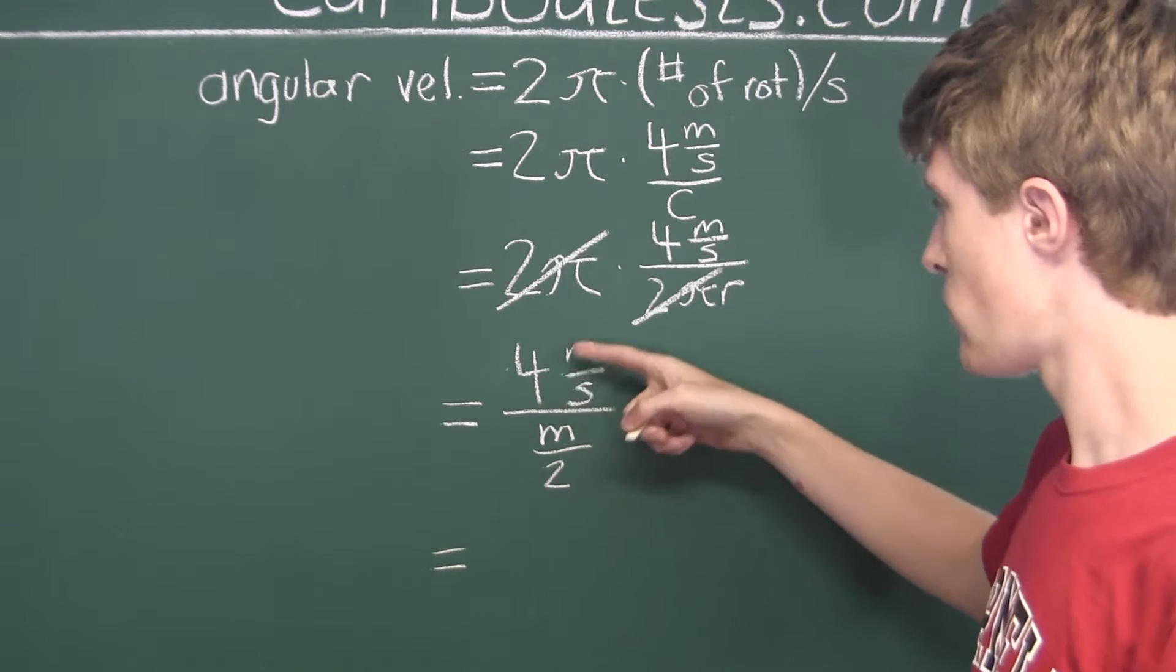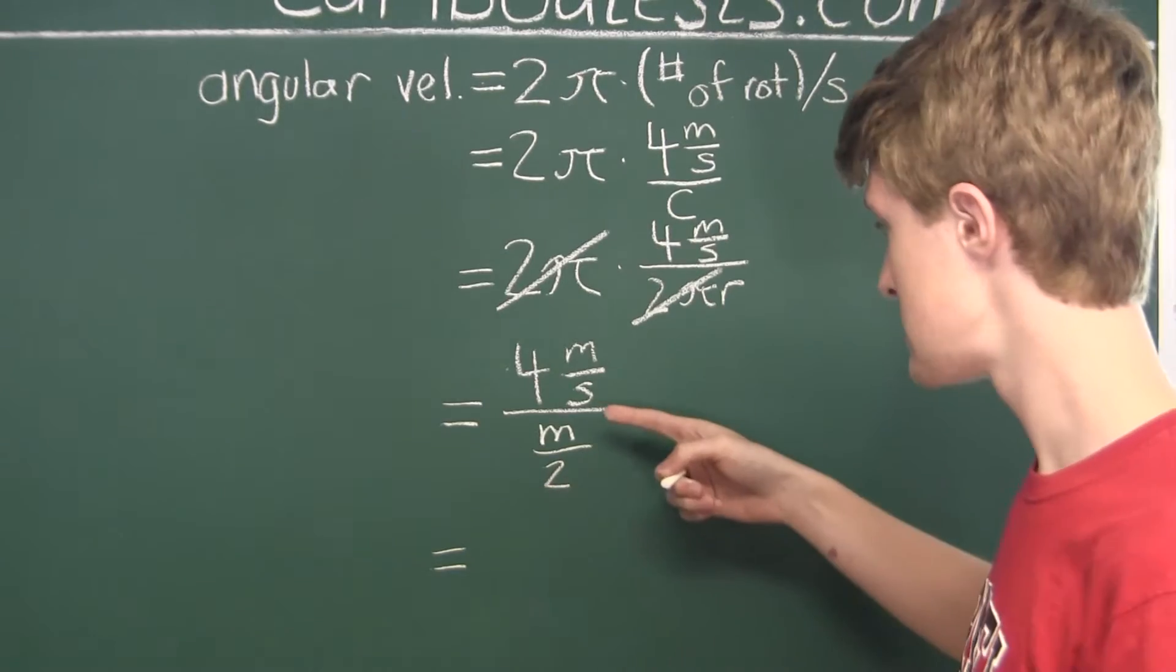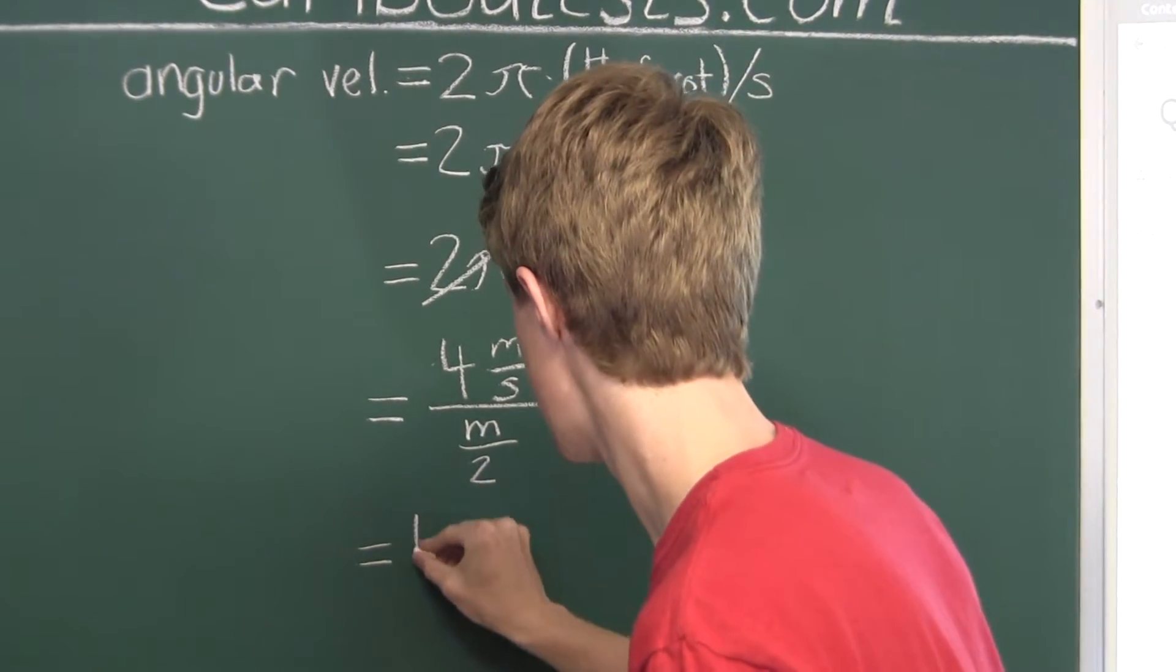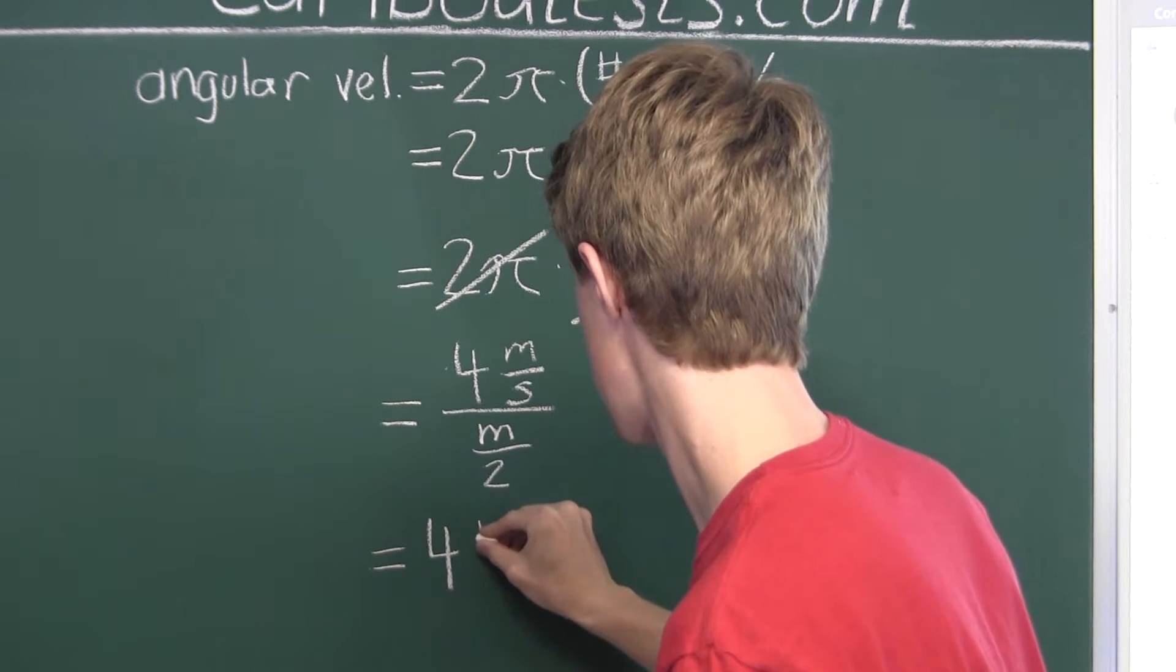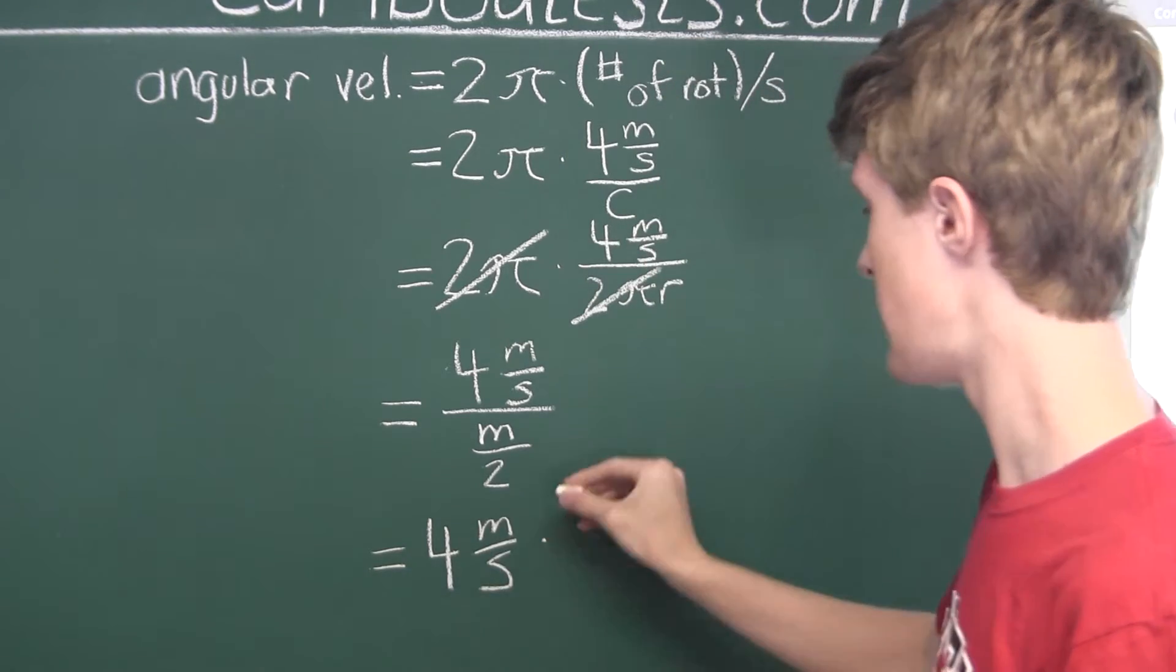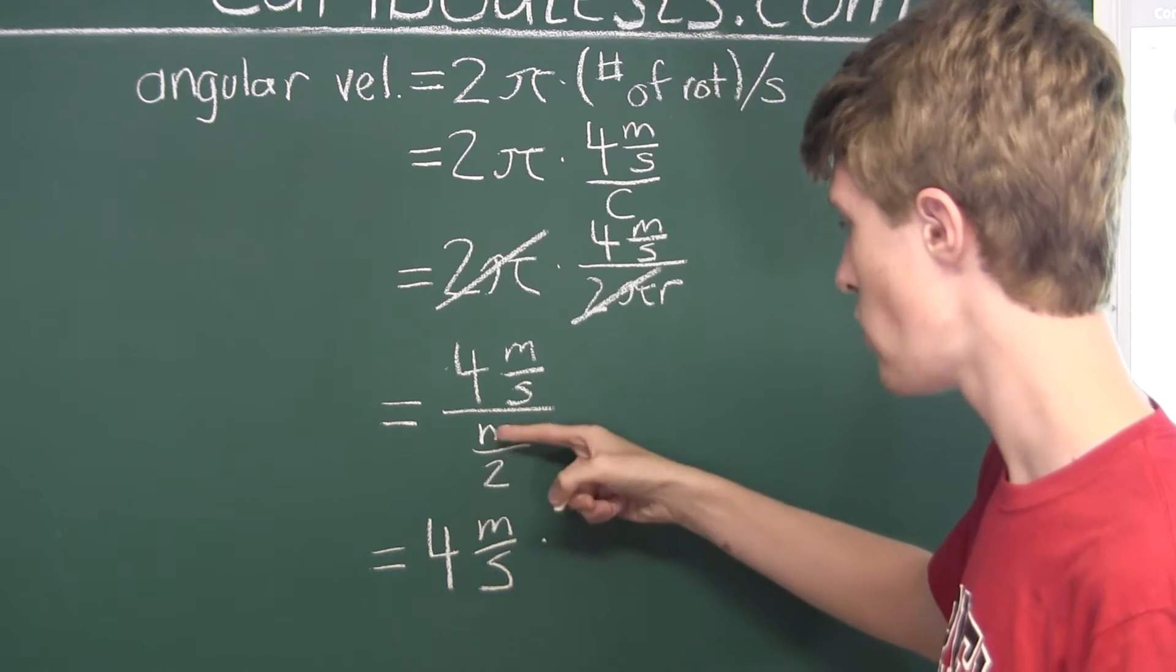Now, here, we have 4 meters per second divided by a fraction. That's the same as multiplying by the inverse of the fraction. So, we would then have 4 meters per second, and then that is multiplied by, so instead of dividing by m over 2, we are now multiplying by 2 over m.